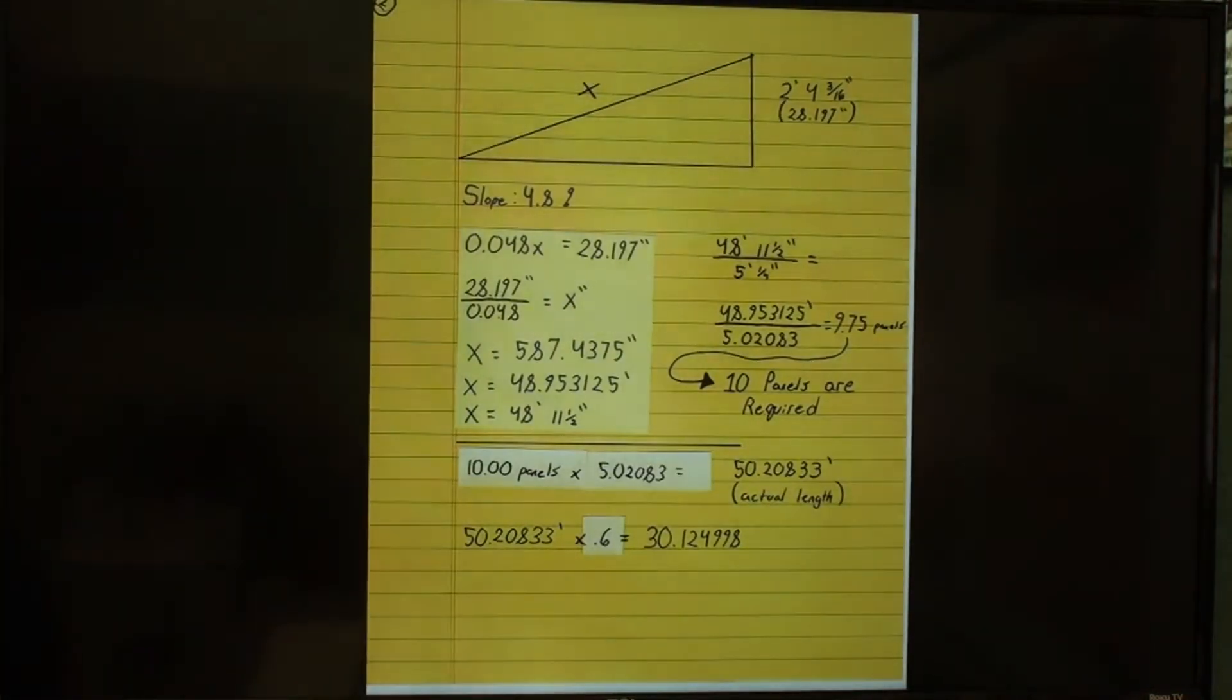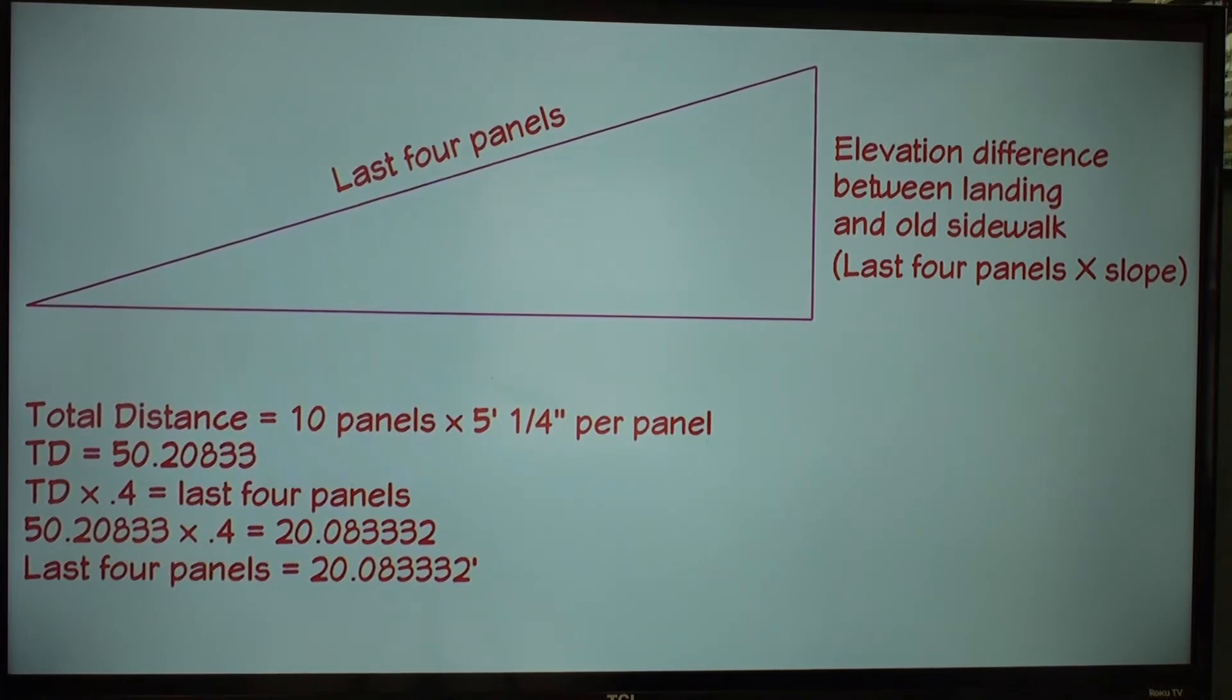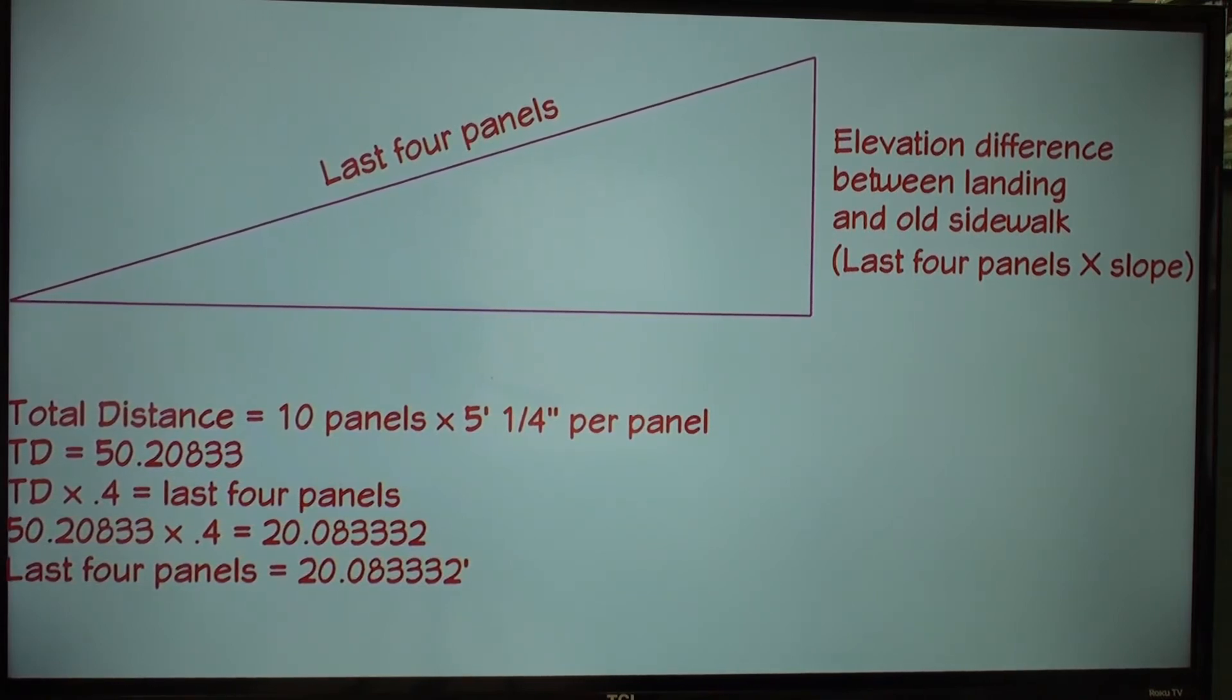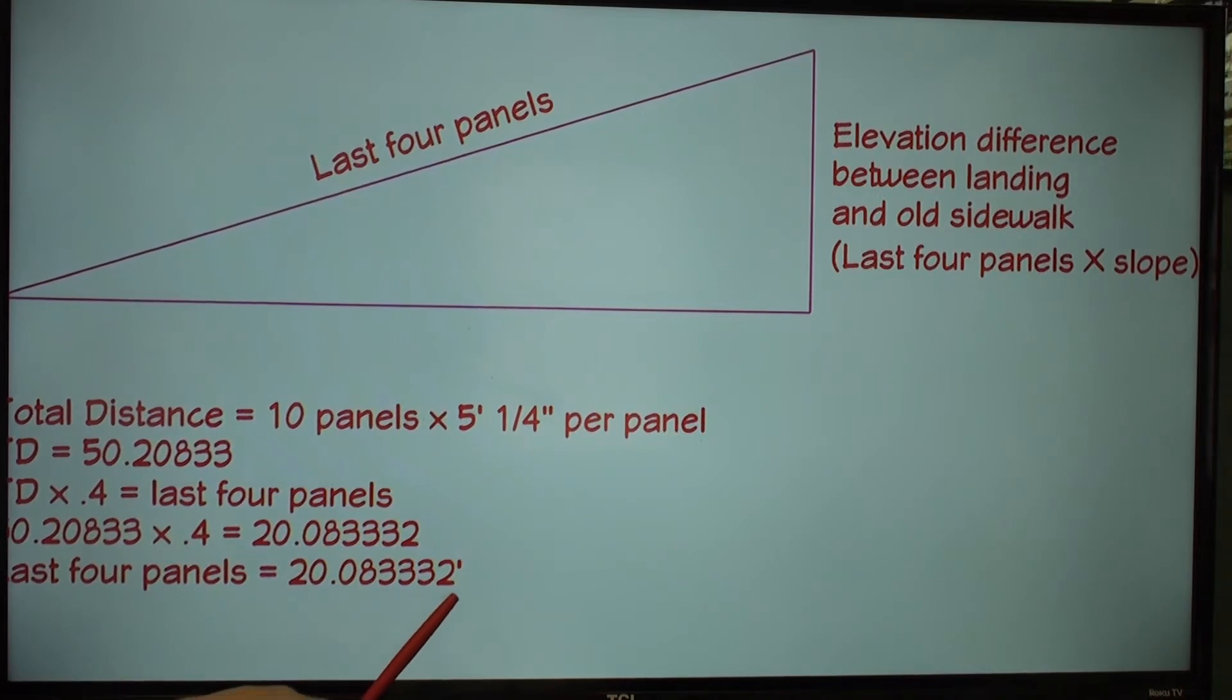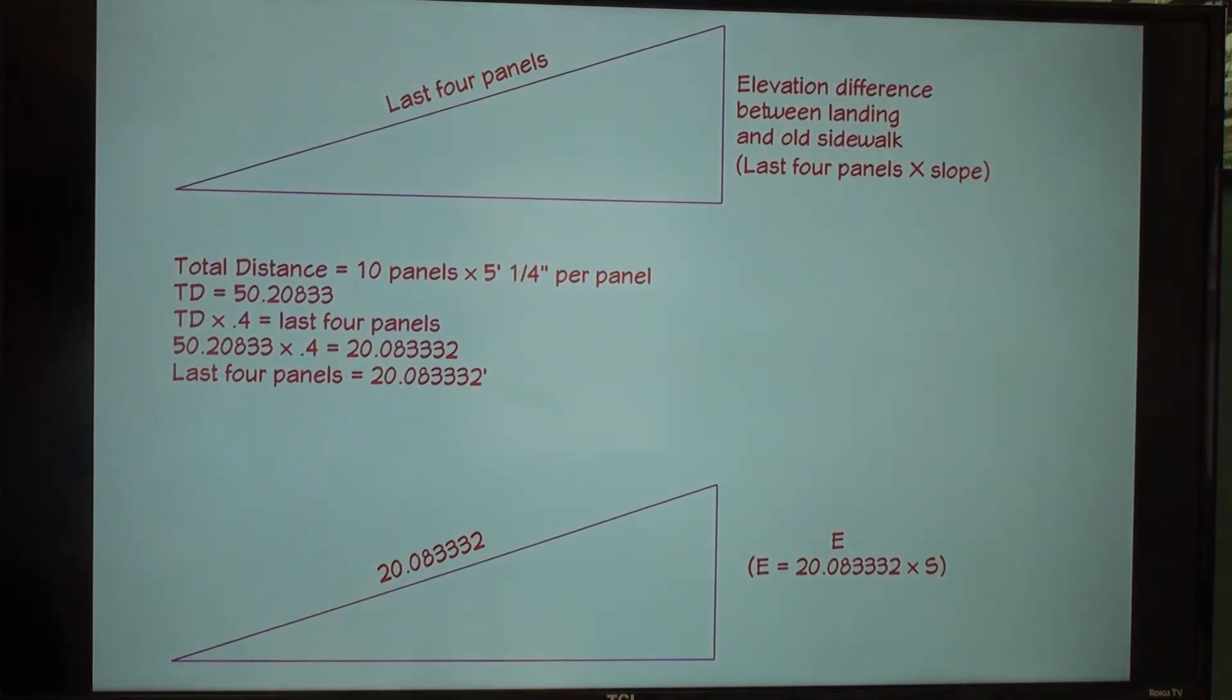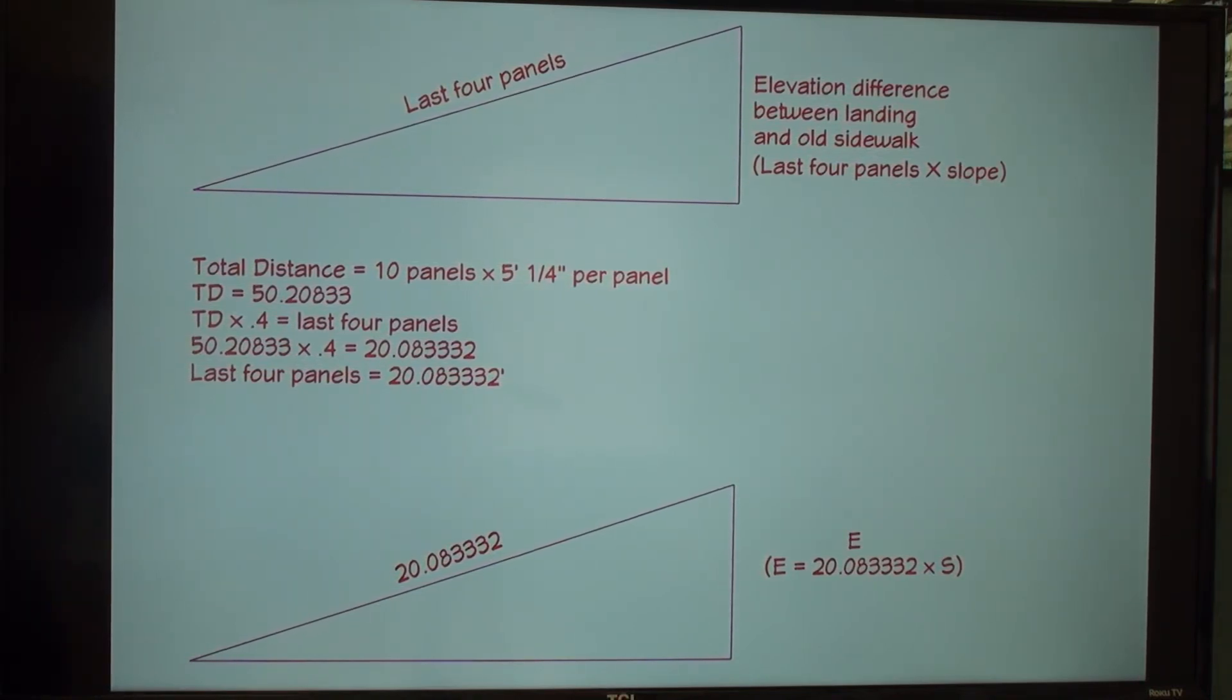This slope is important, because without it, the workers will not know how to pour the concrete so that the two sidewalks connect. This is where it gets a bit tricky. At the bottom, you can see that I worked the problem backwards to determine the actual distance required to accommodate 10 5x5 sidewalk panels. Then, I reasoned that since all the panels are the same size, I could find the length of the last four panels by multiplying the total distance by .4. In essence, I isolated four of the ten panels. You could also determine this at the site by taking a measurement using a tape measure.